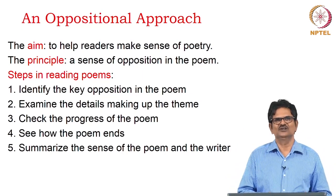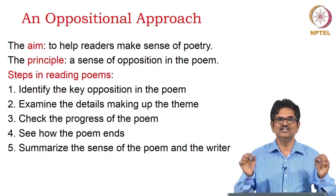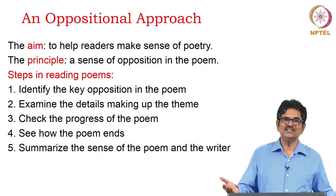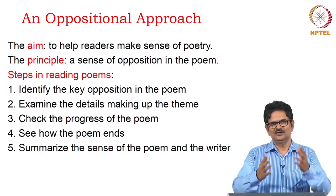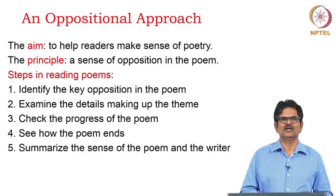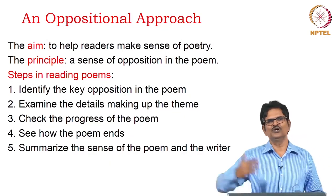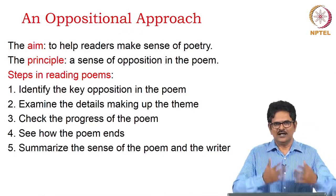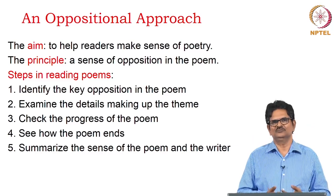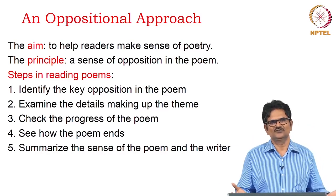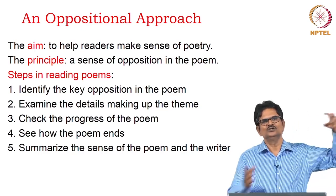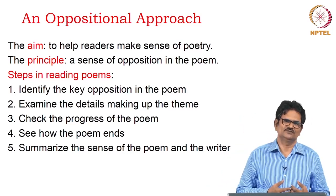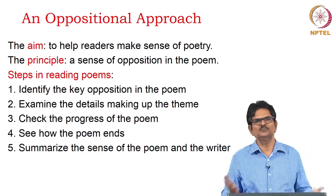When we read poems, we can follow these steps. First, identify the key opposition in the poem — there may be many, but one may be stronger than the other. Then examine the details which contribute to building and maintaining this opposition. Then check how the poem progresses towards the end and how it finally ends. At last, summarize what we feel about the poem and the writer in a few words — starting with the beginning, going to the end through progression, and forming an overall impression of the poet.